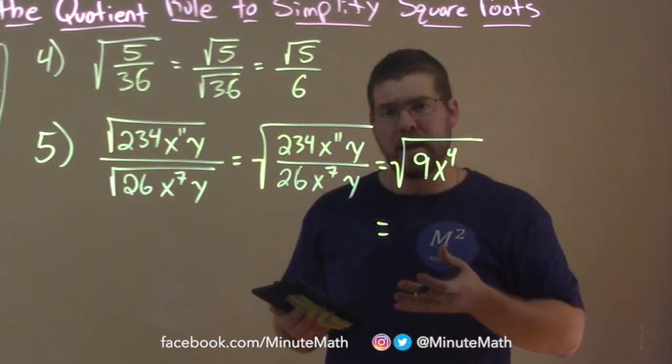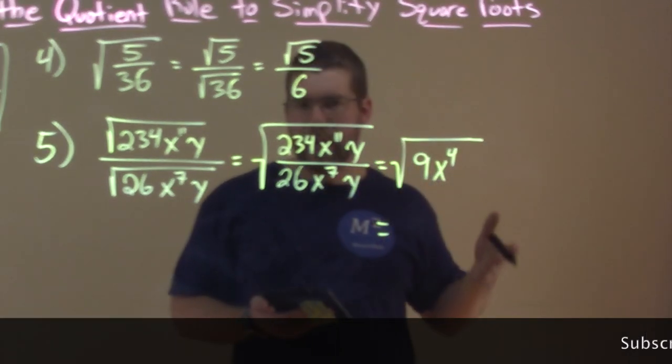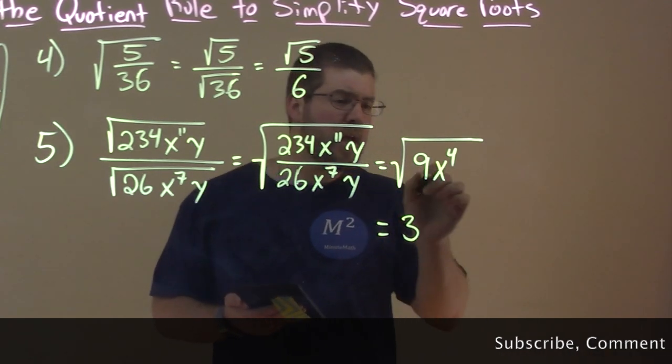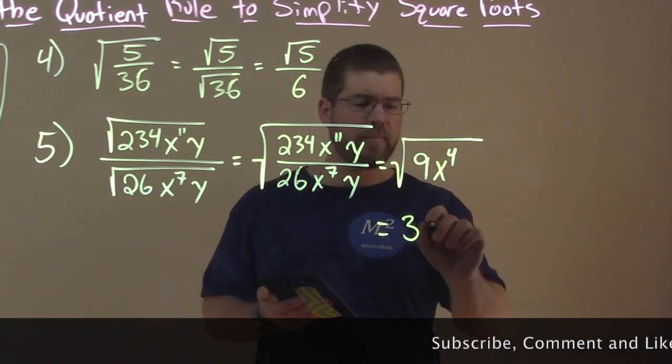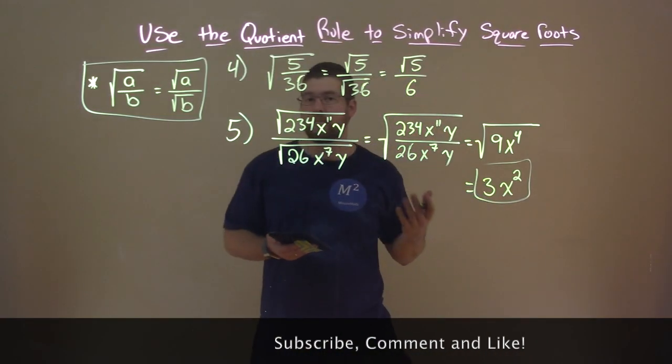Now, I don't need to show that step anymore. So as we get better, we're not going to show every single little step like that. Square root of 9 is just 3, and the square root of x to the 4th power is x squared. And so my answer here is just 3x to the 2nd power.